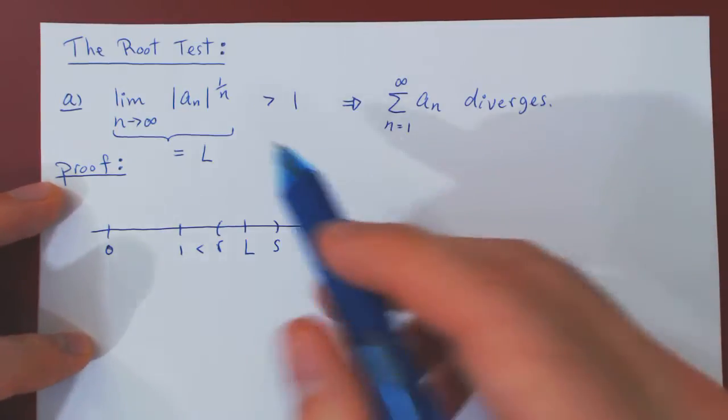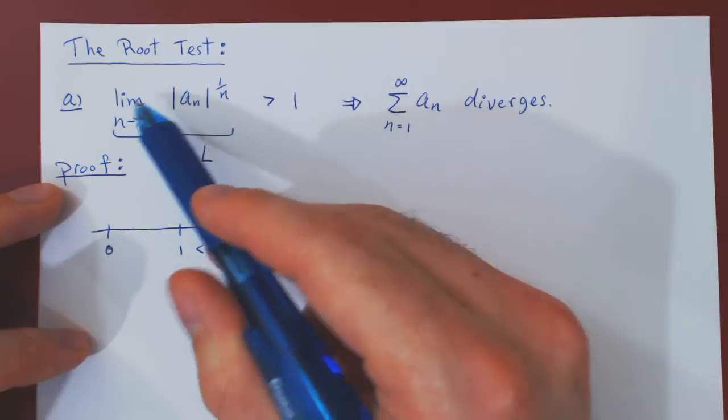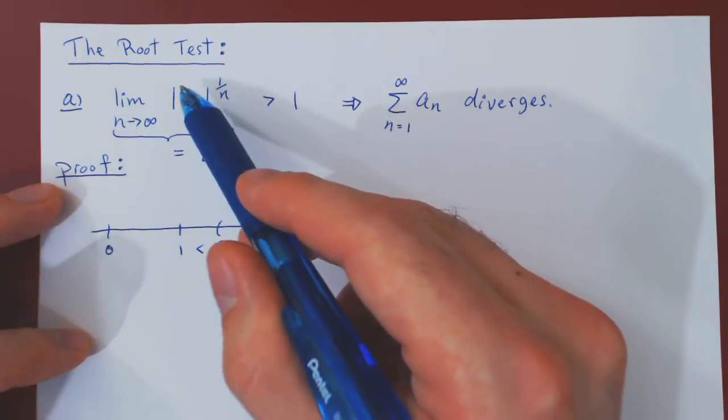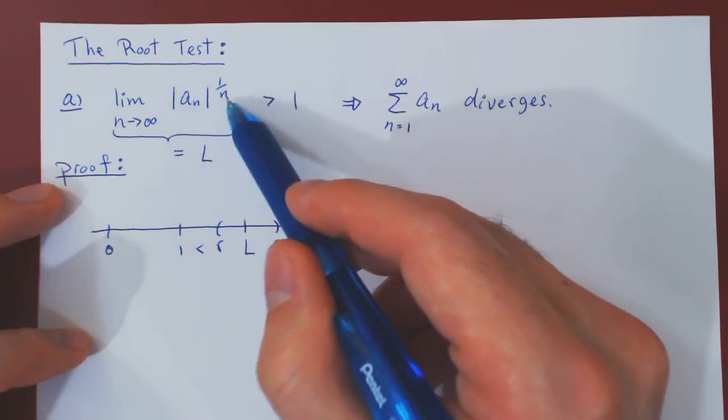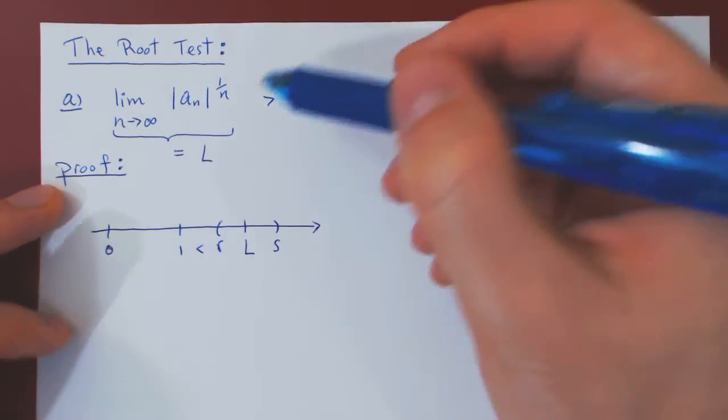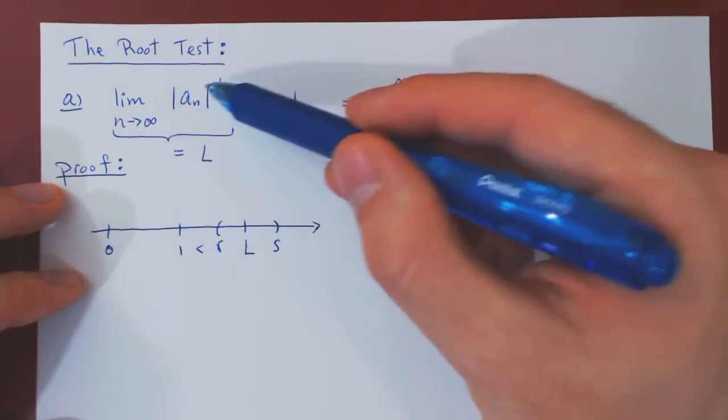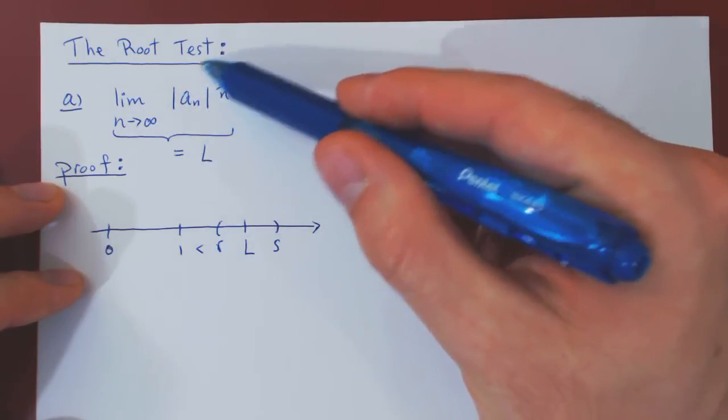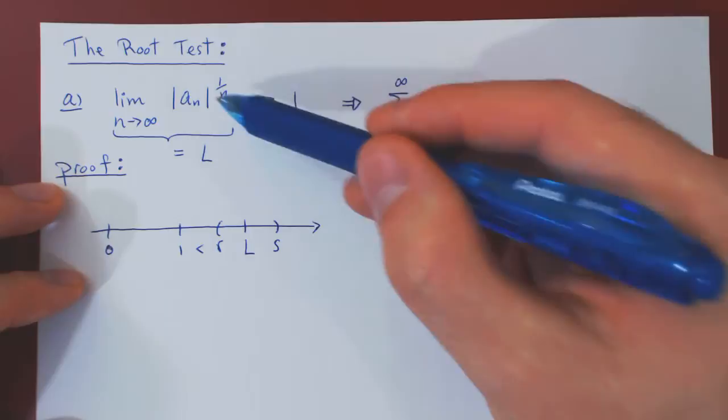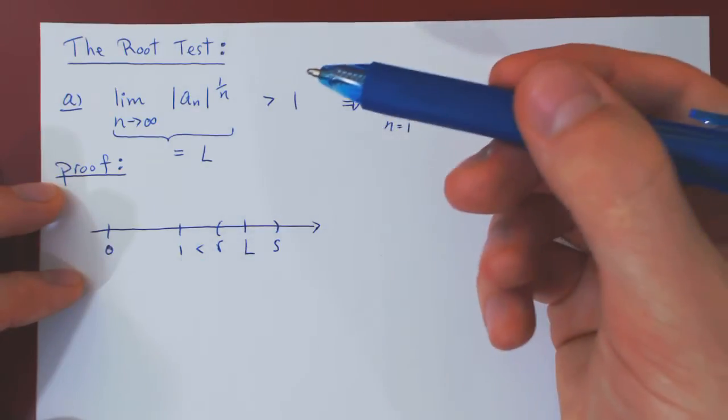All we have to do now is ask ourselves, what does this statement mean? To say that the limit of the nth root of a_n in absolute value as n tends to infinity is equal to L. All this is saying is, as n gets bigger and bigger, our expression is getting closer and closer to L. How close? As close as we want.